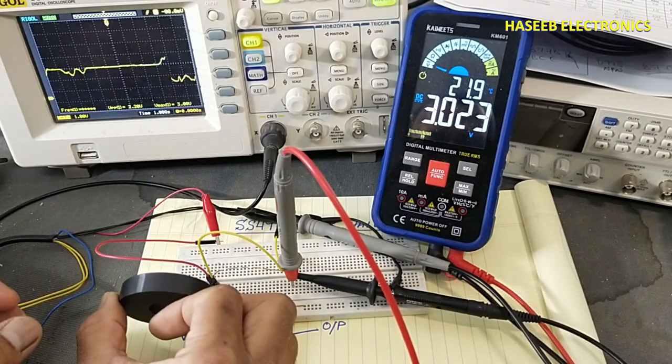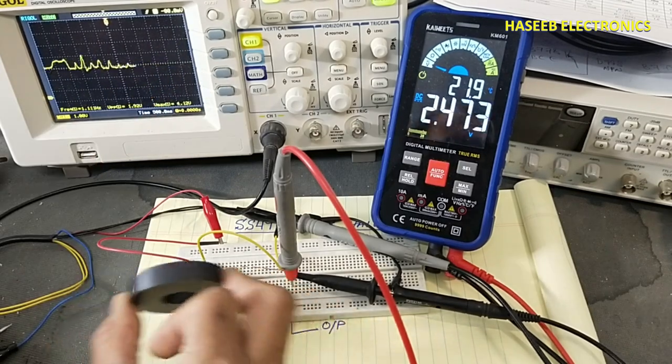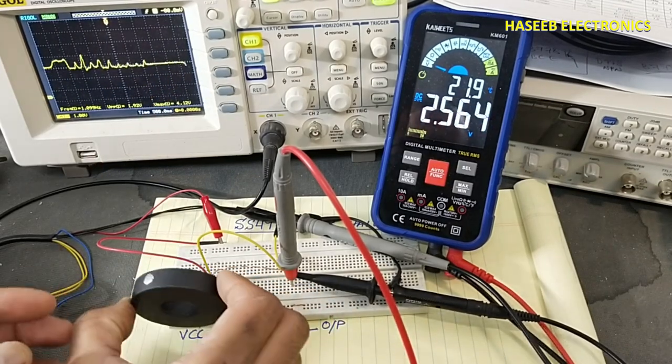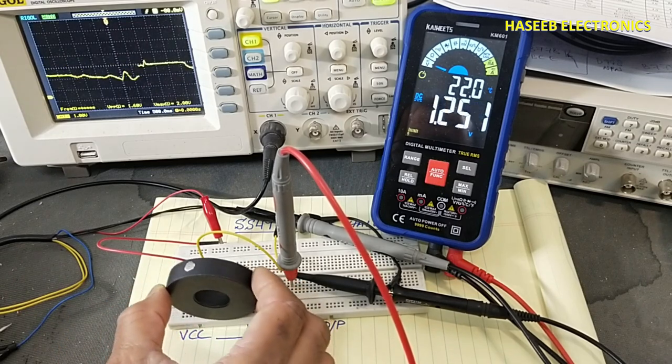When south pole will come, the voltage is increasing. So it will detect the intensity of the magnetic field.